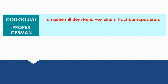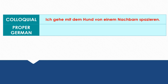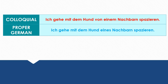In this next exercise I will give you a sentence that you will hear in colloquial German, and you will have to come up with that same sentence in proper German using the genitive case. First sentence: 'Ich gehe mit dem Hund von einem Nachbarn spazieren.' How would you say this in proper German? The answer is: 'Ich gehe mit dem Hund eines Nachbarn spazieren.'